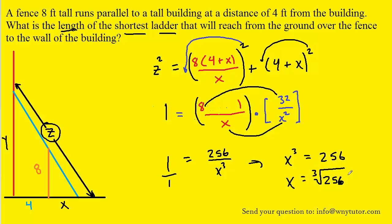At this point, what we have is a critical number, but we have to do the first derivative test to make sure that at this critical number, the z squared function is indeed minimized. So that's our next move.